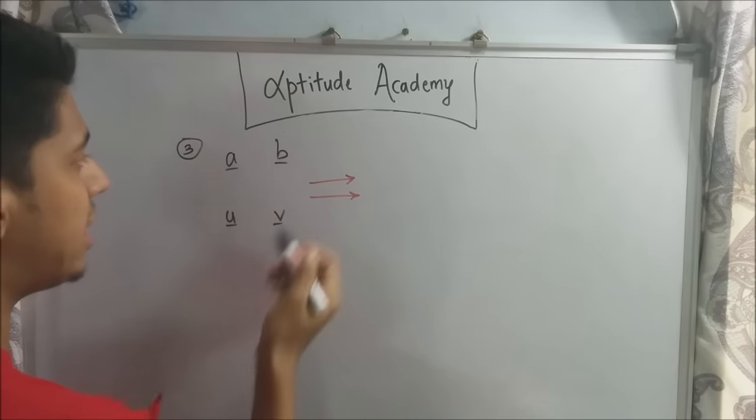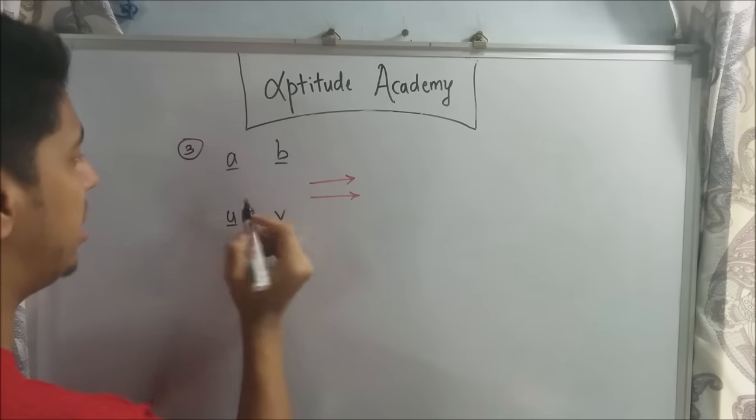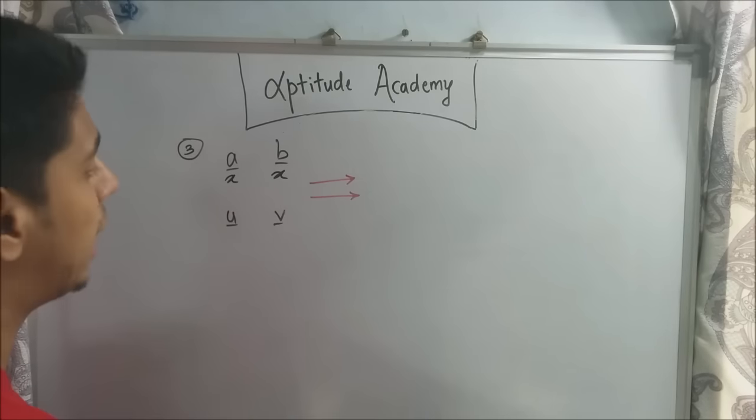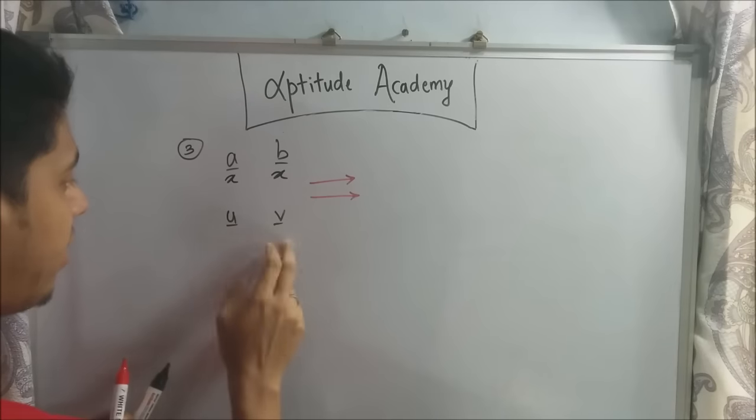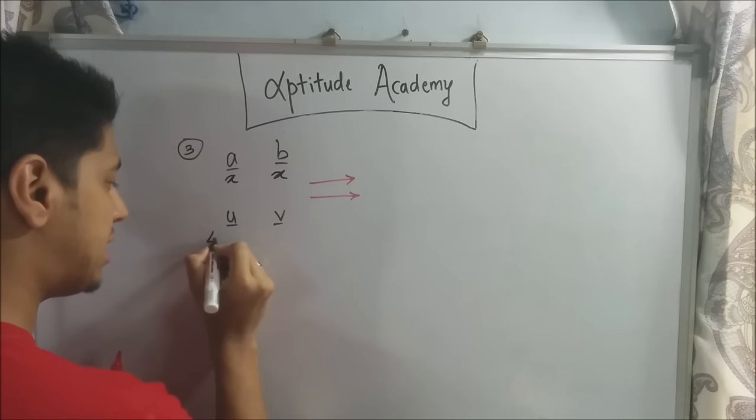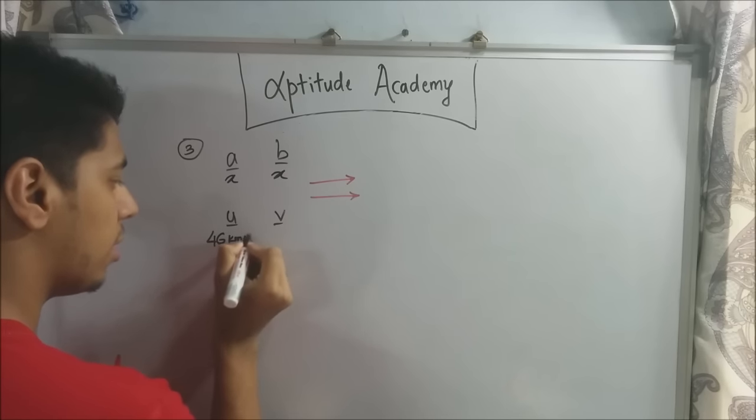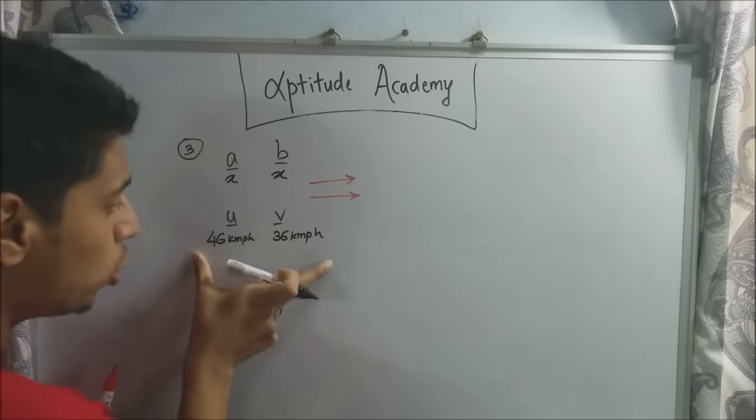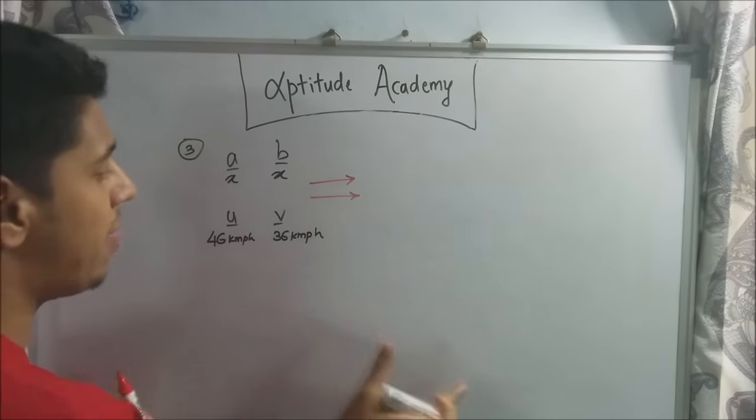And they said now, both the trains are of equal length. So you can give any variable here. I'll just give it as X and X. They are both the same. You can use AA, BB, whatever you want. Now, they've also said that the speeds are 46 kilometers per hour and 36 kilometers per hour. Now, don't convert it just yet. See what you have to do and then you convert it.